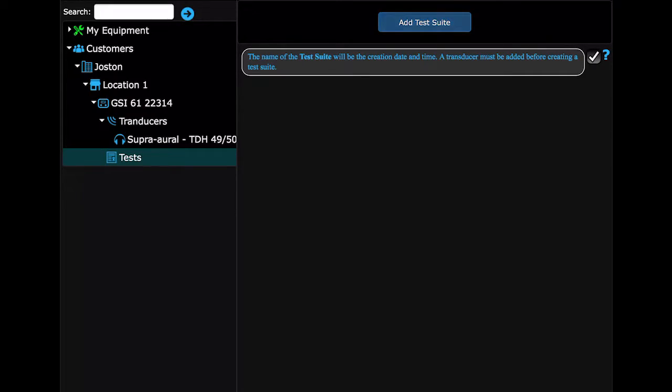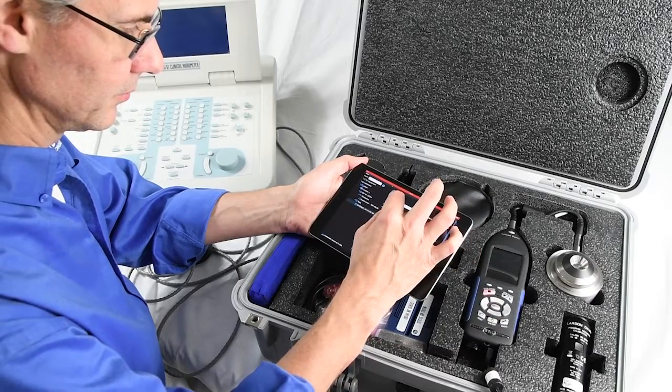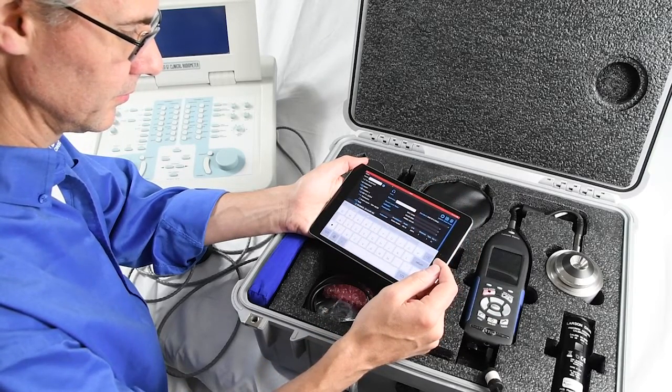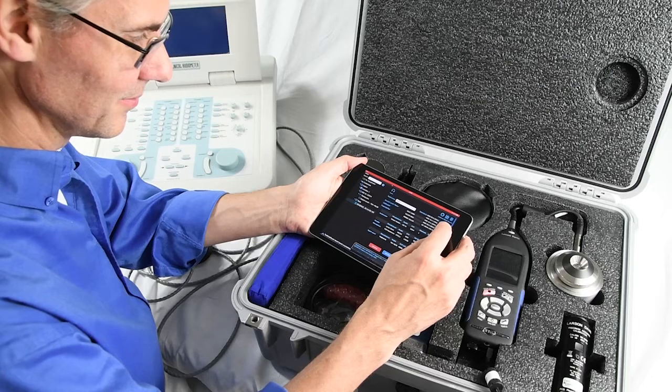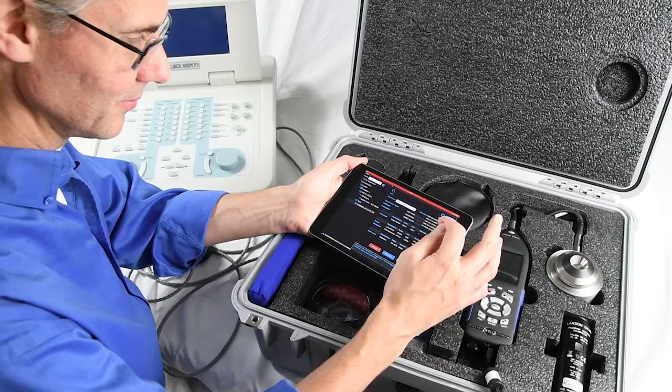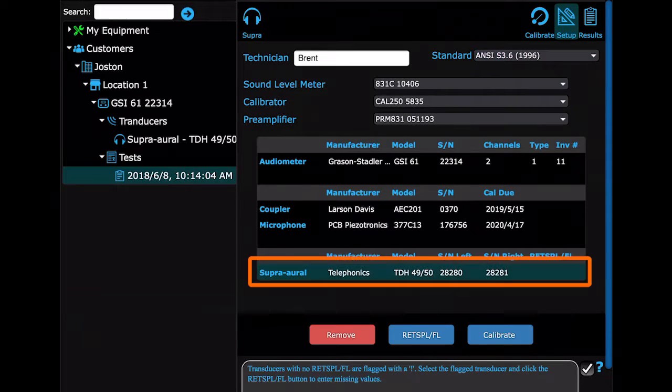Then select Add Test Suite in the main view. You will need to set up the test now. Enter your name, like Brent is doing. Choose a standard you will be testing to. Make sure the correct equipment you will be using are chosen. Then click the transducer and click Red SPL.